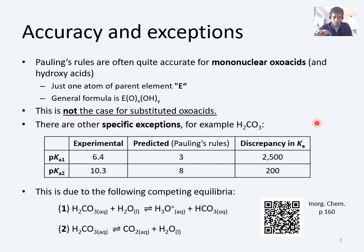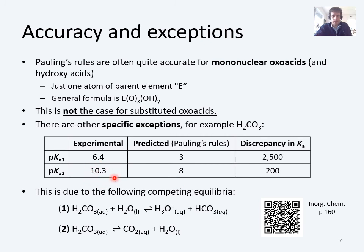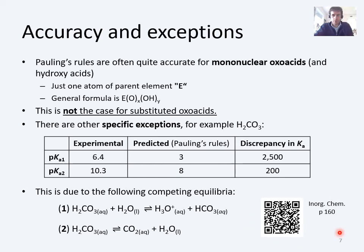There are other exceptions too. For example, carbonic acid gives an experimental pKa₁ of 6.4, but Pauling's rules predict 3 based on there being only one oxo group. This is quite a big discrepancy — about two and a half thousand times. The same discrepancy applies for pKa₂, albeit not as drastically. This is not because carbonic acid is substituted; it is actually to do with equilibria that exist in solution. Carbonic acid in solution is in competition with dissolved CO₂, and because of that dissolved CO₂, the experimental pKa₁ tends to be too low. When you take the dissolved CO₂ into account, you get a pKa of about 3.6, which is much closer to Pauling's rules.